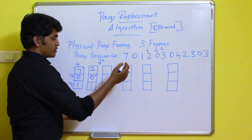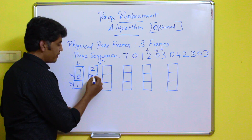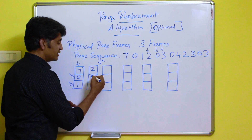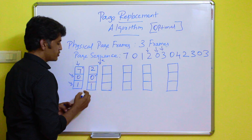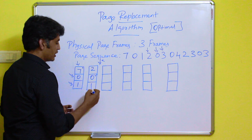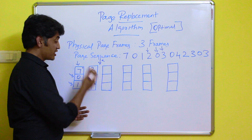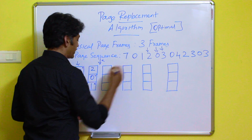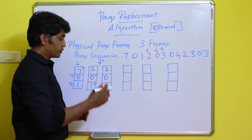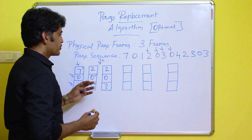After the page fault, the operating system needs to decide which page is not used for the longest period of time. Comparing the three pages: page 2 was recently replaced, page 0 was just referred to, so both are considered used. Page 1 is not used for the longest period of time, so page 1 is replaced by page 3. The frames are now: 2, 0, 3.